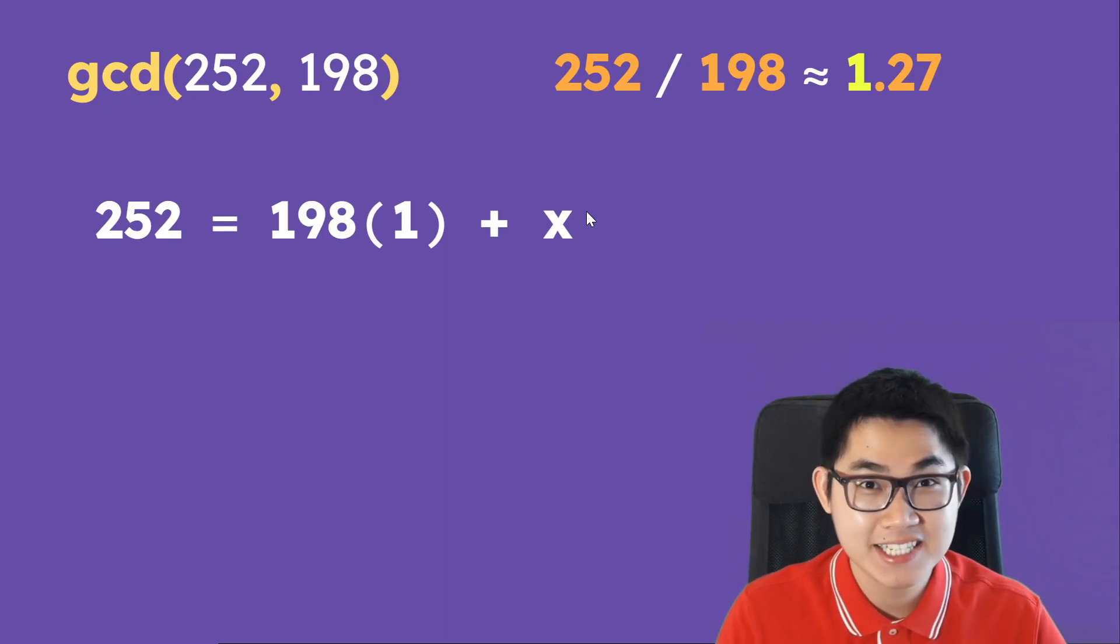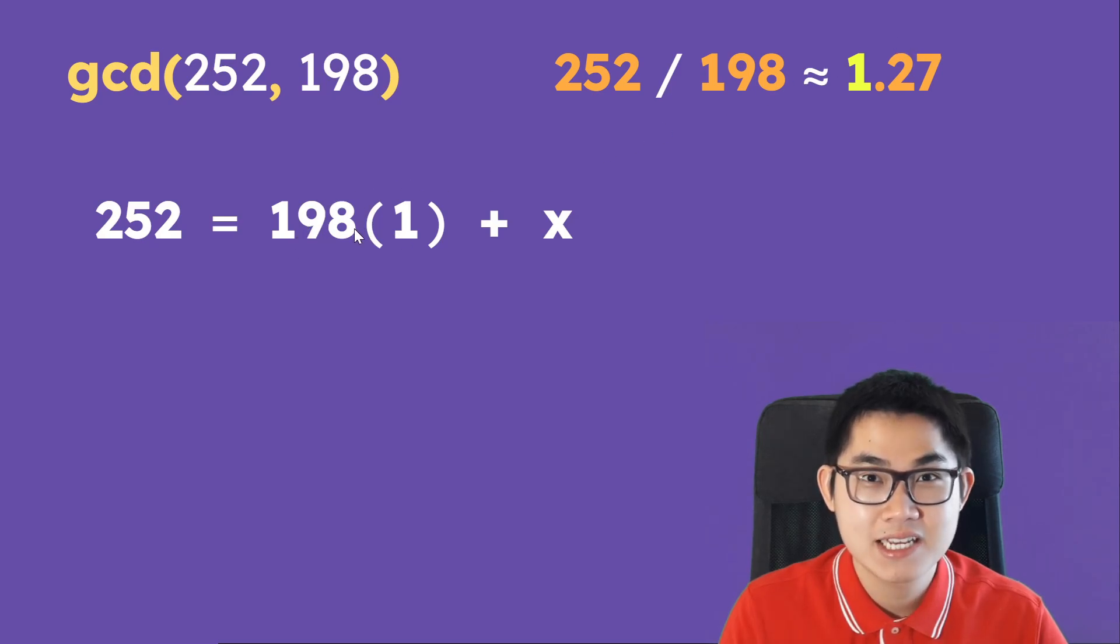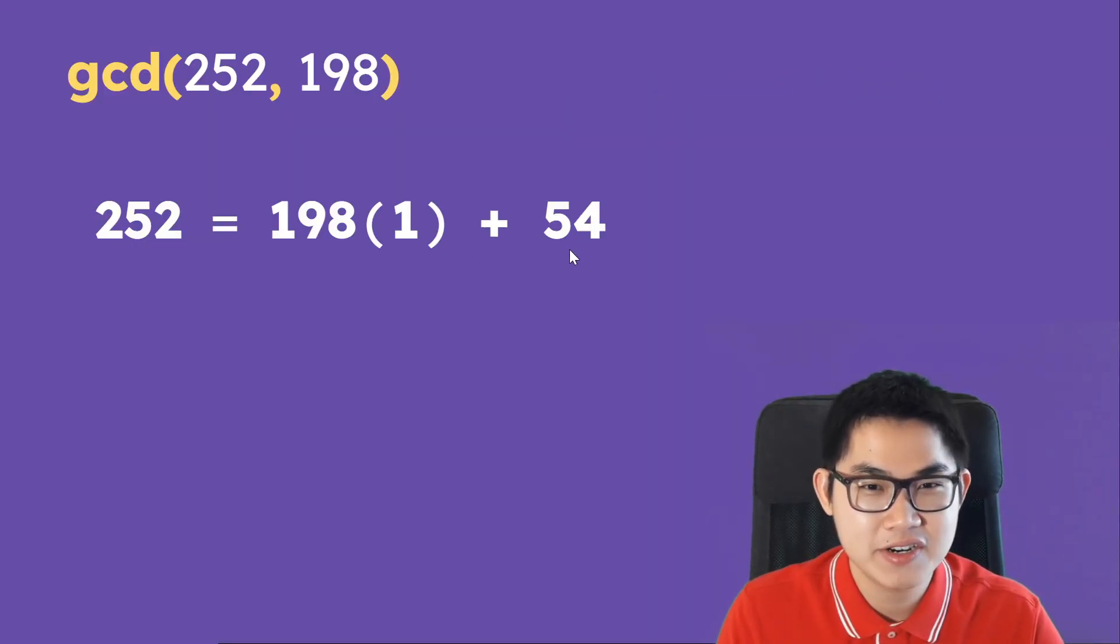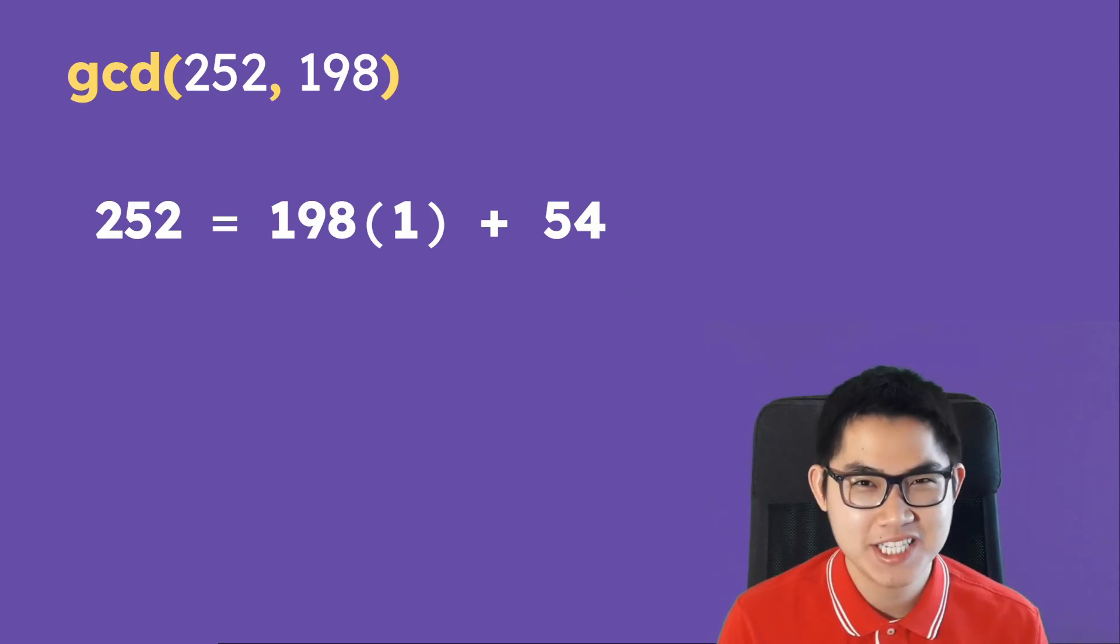And why do we have X? Well, it's because we divide this and we get a decimal, which means that if we take 1 times 198, we have to plus something to get 252. So let's go ahead and solve for the remainder, and we get 54.